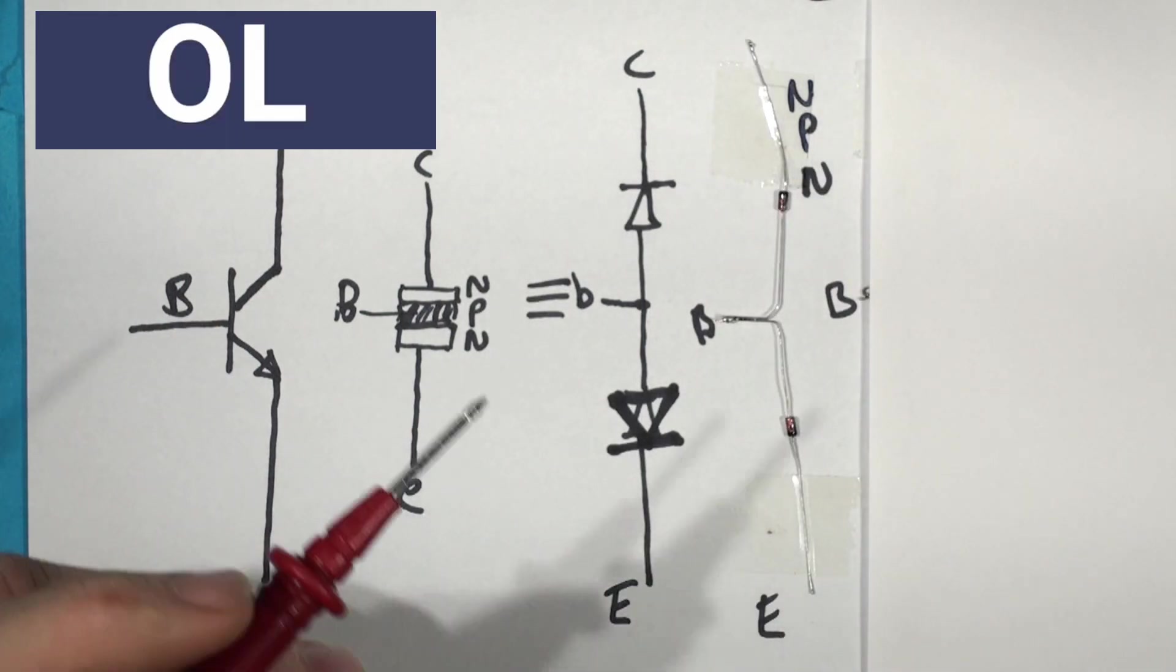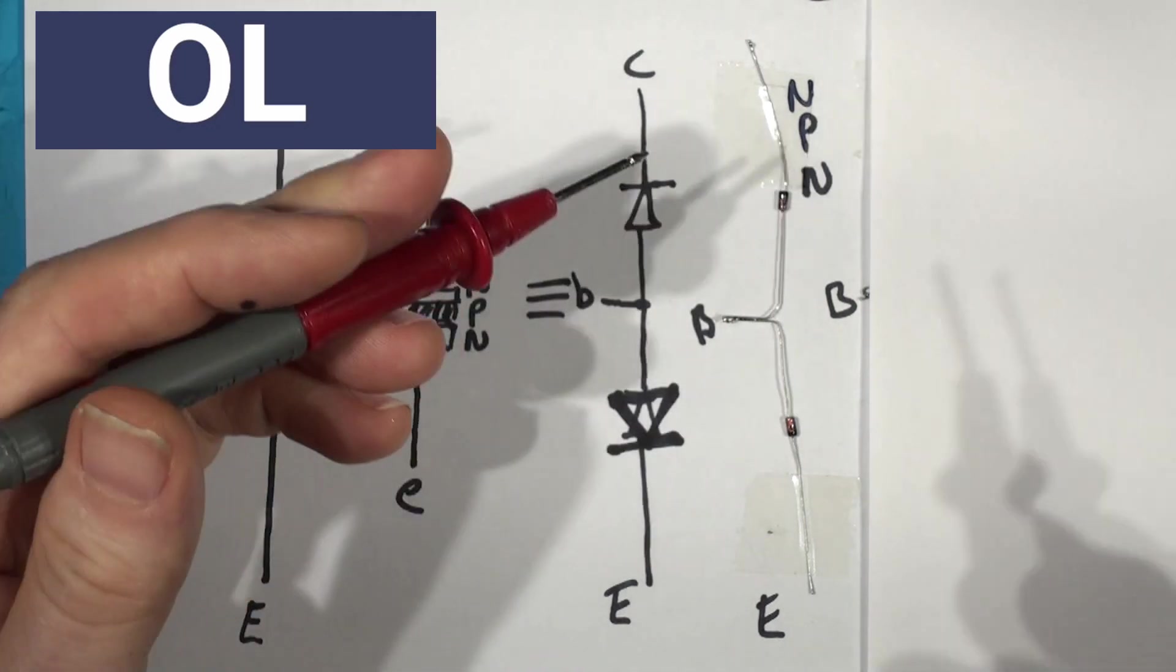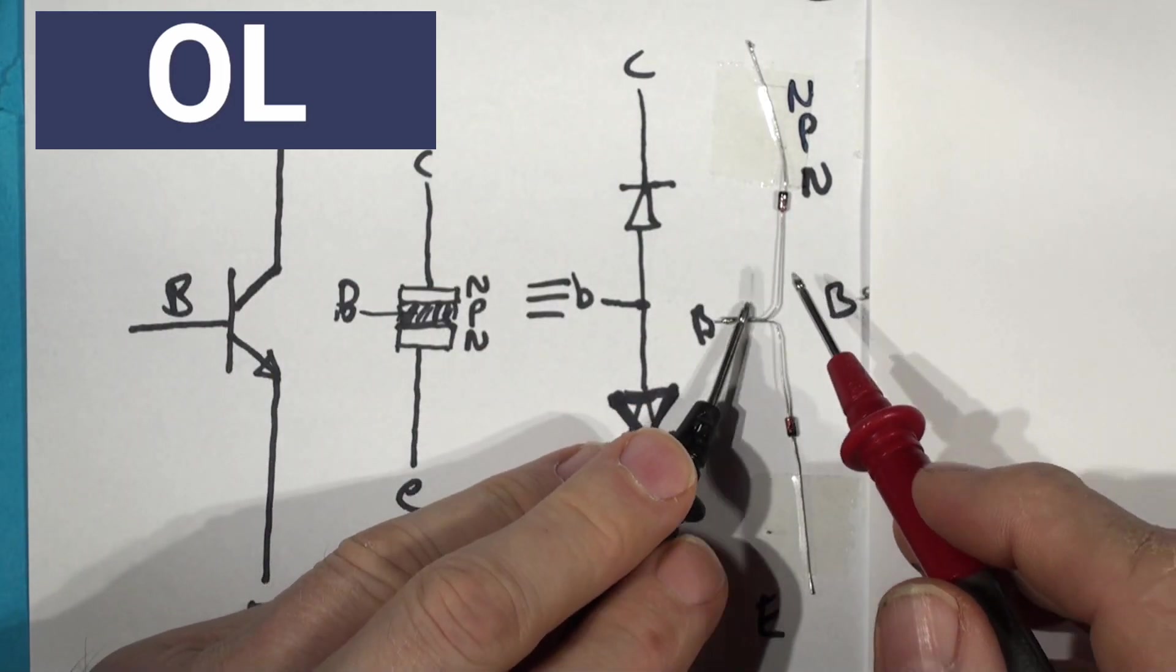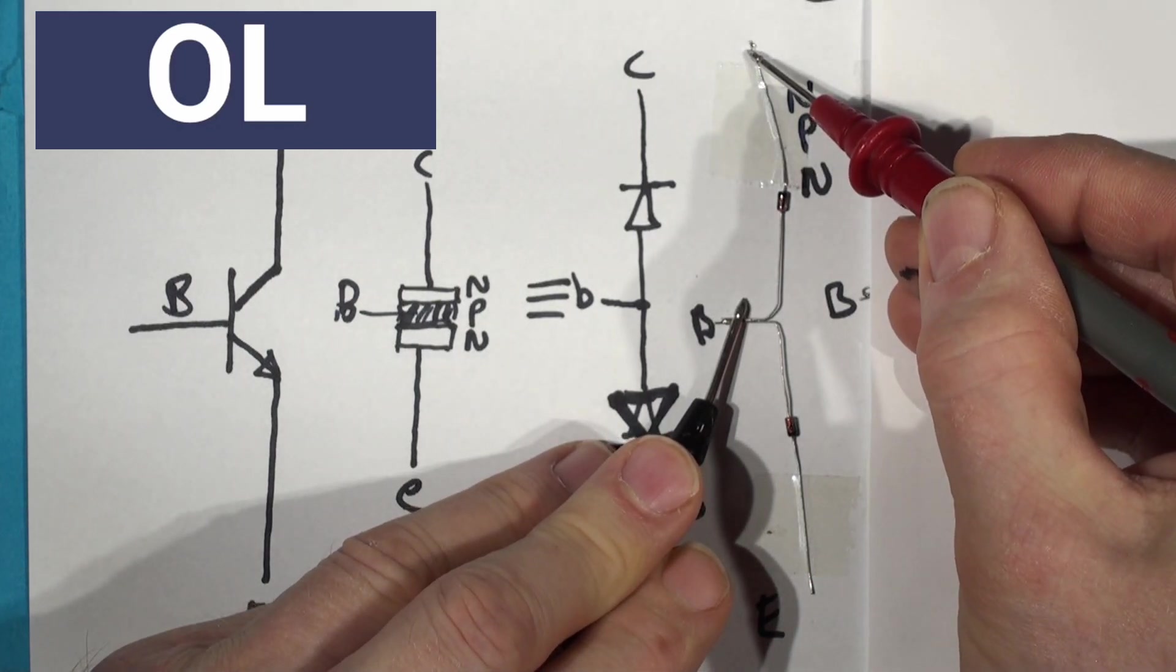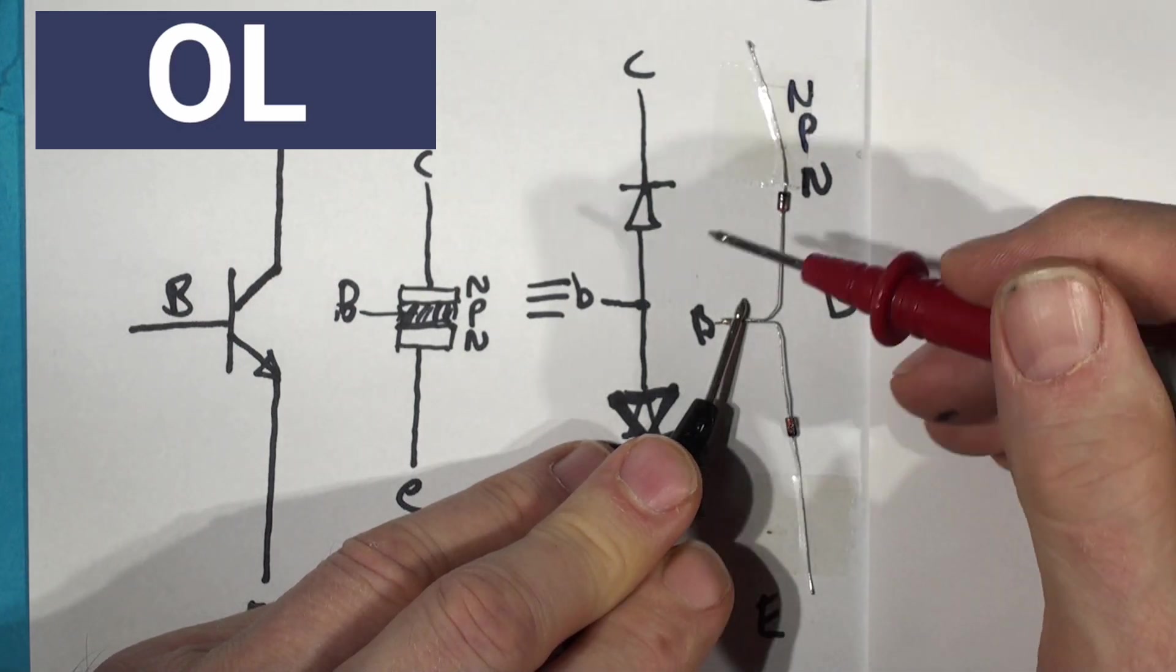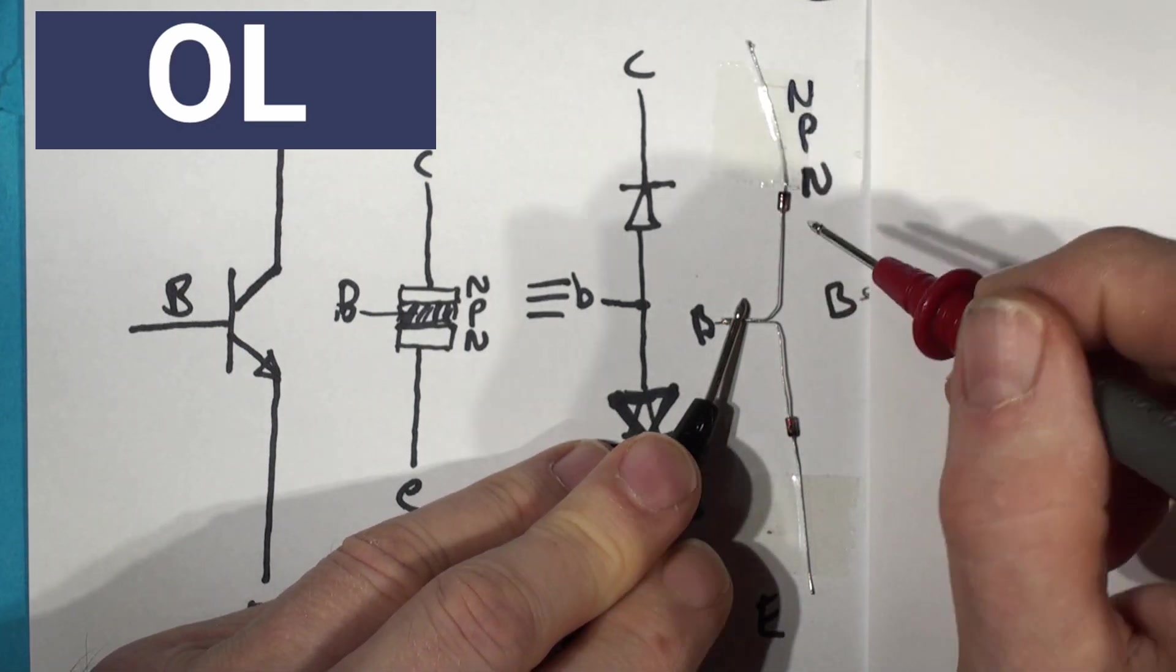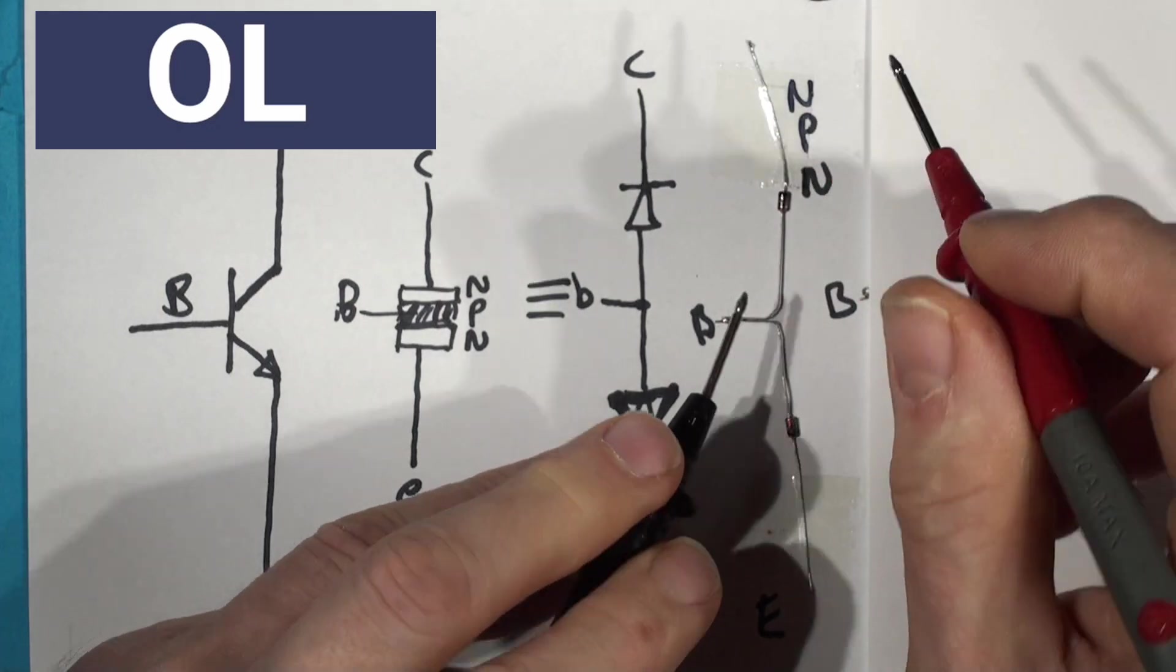And then if we meter these things, if you find out which one the base is, and put your negative probe on the base, you get no current flow, no voltage. Now, being an NPN, most of them are silicon NPN these days, so you'll get between 0.6 and 0.7, 0.8 volt drop, usually 0.65. So 600 millivolt drop across a forward bias junction. That's a normal diode forward voltage drop.